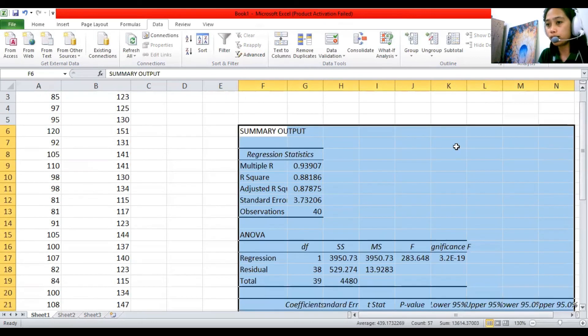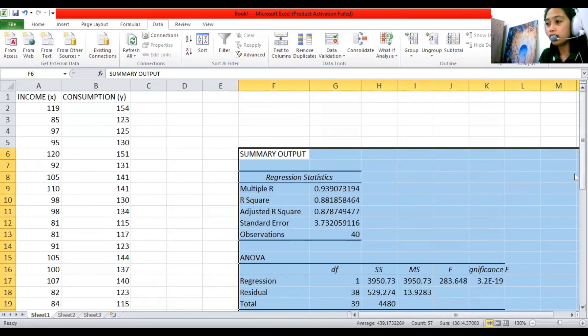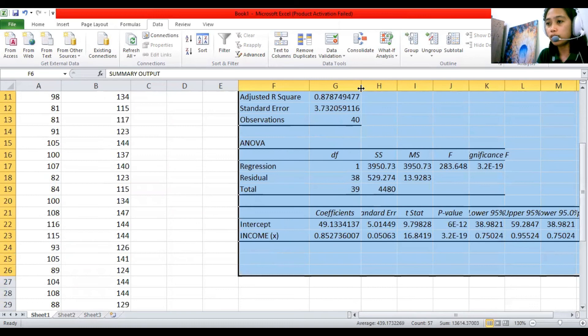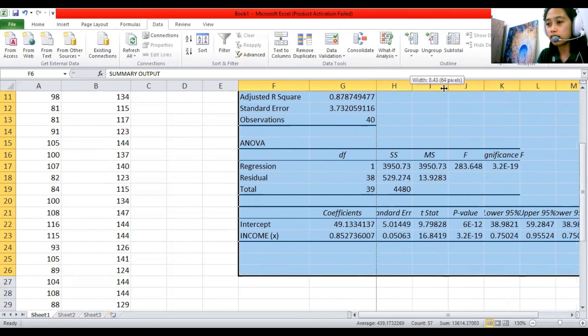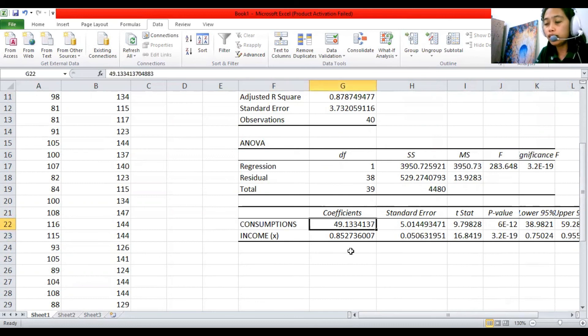And then we will get this result. So as you can see, there are a lot of numbers, but we are trying to focus here with the coefficients. So we can try to change this one as consumptions. We can modify this one, actually. So we're just concerned with the coefficients. Okay. Which is our consumption intercept is 49.1334137 and our income coefficient is 0.852736007.